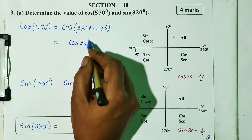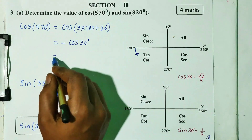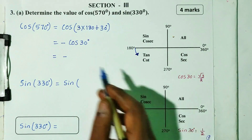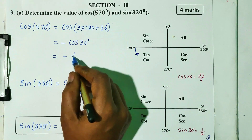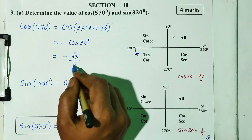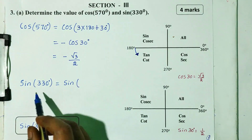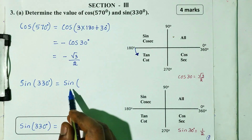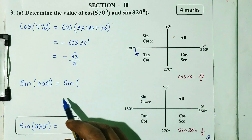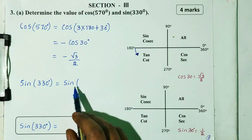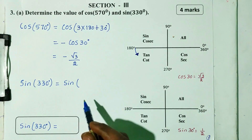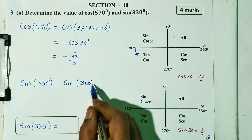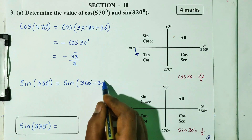The answer is 30 degrees. Start with minus. Cos is negative. So, cos 570 equals minus cos 30, which equals minus 30, and that is equal to 330.